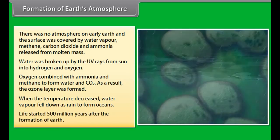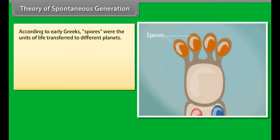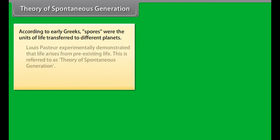When the temperature decreased, water vapor fell down as rain to form oceans. Life started 500 million years after the formation of Earth.